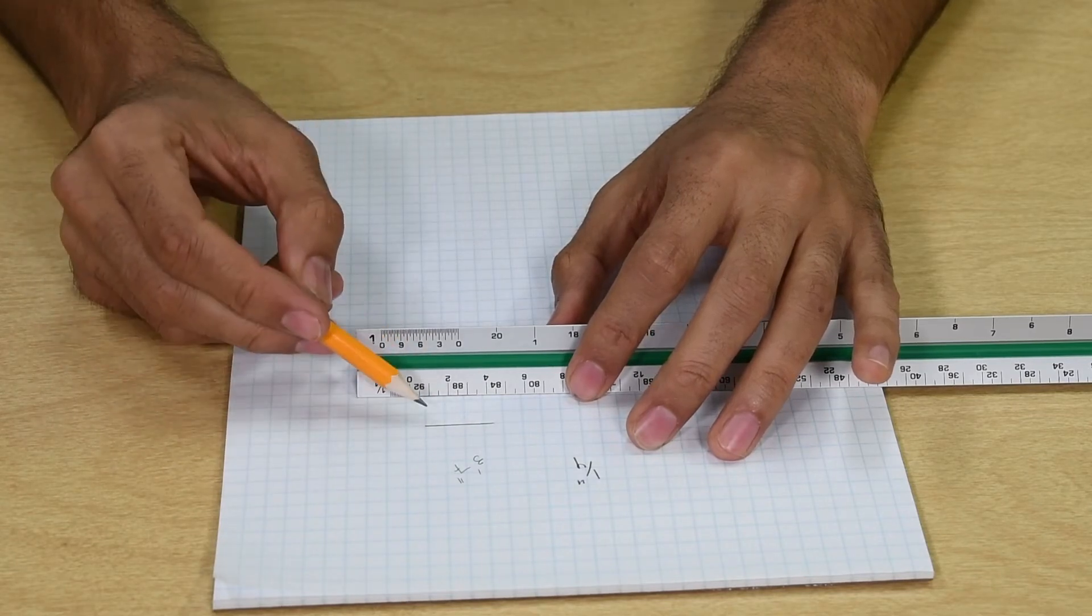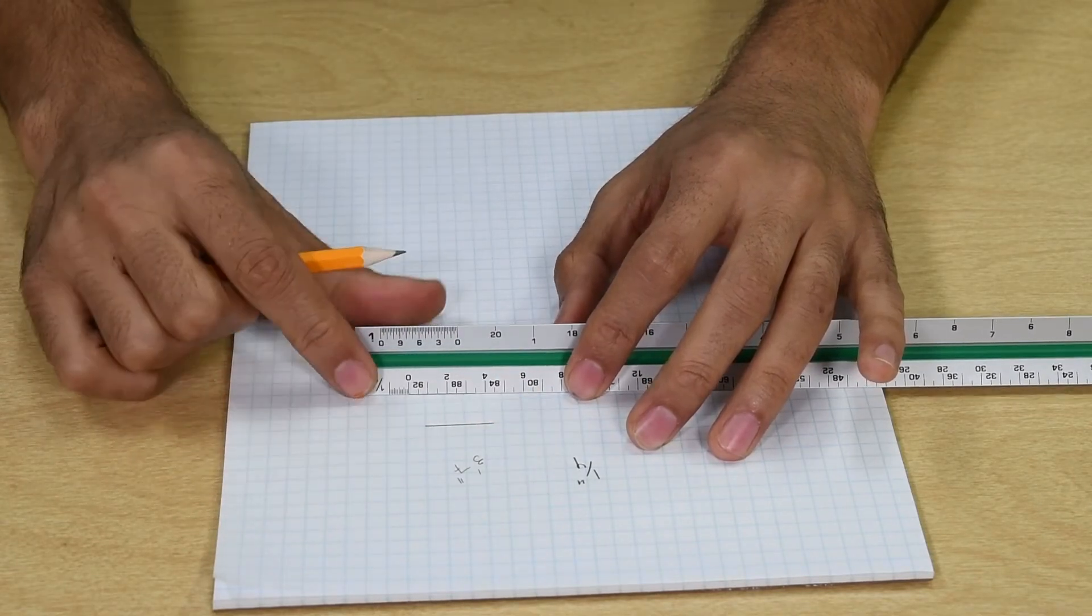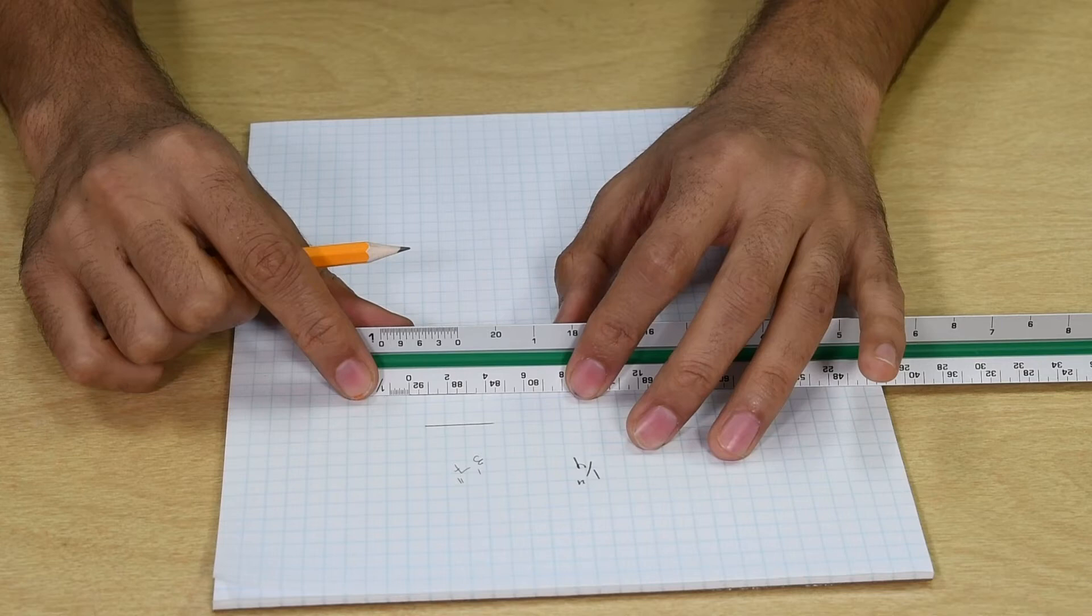Let's say we would like to measure a line at quarter-inch scale. That means a quarter inch on the paper equals 12 inches or one foot.